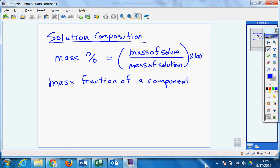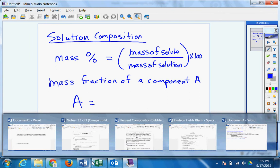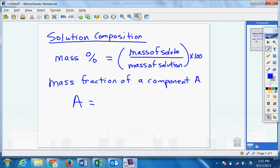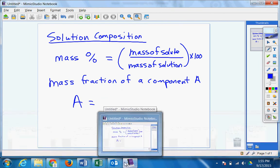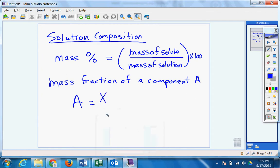All right, so these terms are long, yet they're not that complicated of a thing if you've seen it. Let's say we have this. So x of a is going to equal the moles of a over the moles of b plus the moles of a.